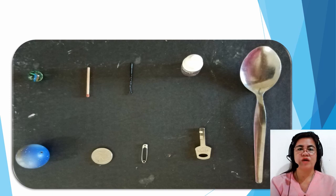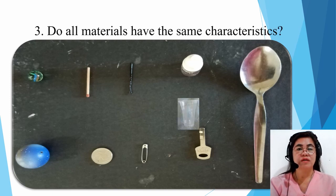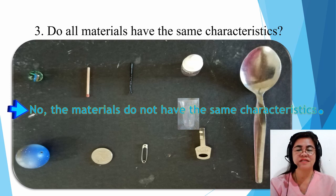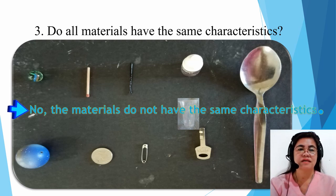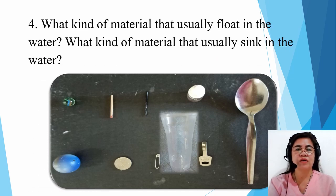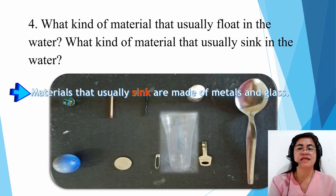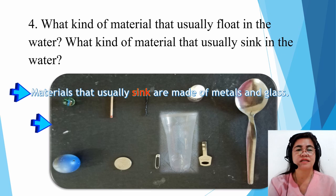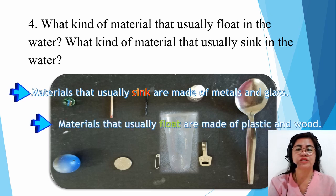Question number three: do all materials have the same characteristics? No, the materials do not have the same characteristics. Some are made of glass, wood, metal, and plastics, and their shape and colors vary. Question number four: what kind of materials usually float or sink in the water? Materials that usually sink are made of glass and metal, while materials that usually float are made of wood and plastic.